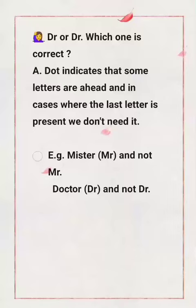We are here today to learn about this particular grammatical fact. A dot in the English language indicates that some letters are still ahead — meaning the missing letters can be represented by a dot. A dot indicates that some letters are lying ahead.